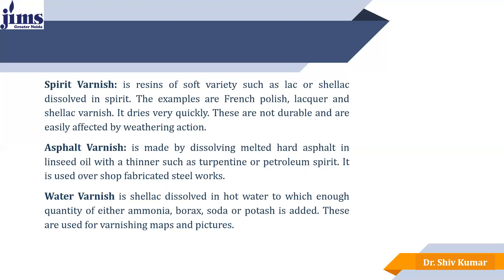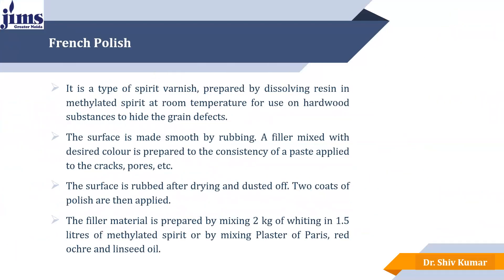Water varnish is made by dissolving shellac in hot water. An adequate quantity of either ammonia, boric soda, or potash is added. These are used for varnishing maps and pictures and are comparatively durable. French polish is a type of spirit varnish prepared by dissolving resins in methylated spirit at room temperature, used on hardwood surfaces to hide grain defects. The surface is made smooth by rubbing. A filler mixed with the desired color is prepared to paste consistency and applied to cracks and coats. The surface is rubbed after drying with sandpaper, and 2-3 coats are applied depending upon the desired finish.